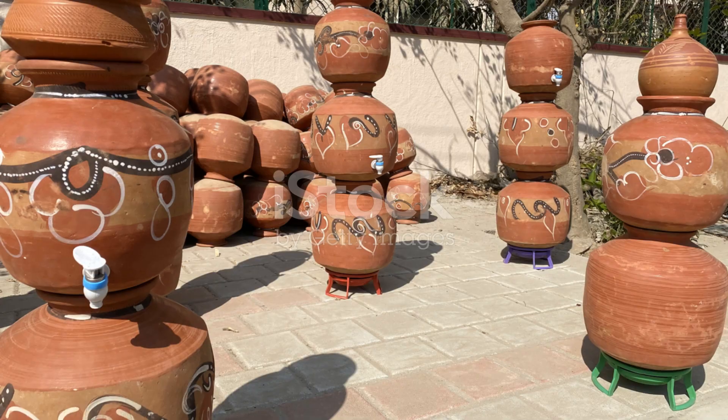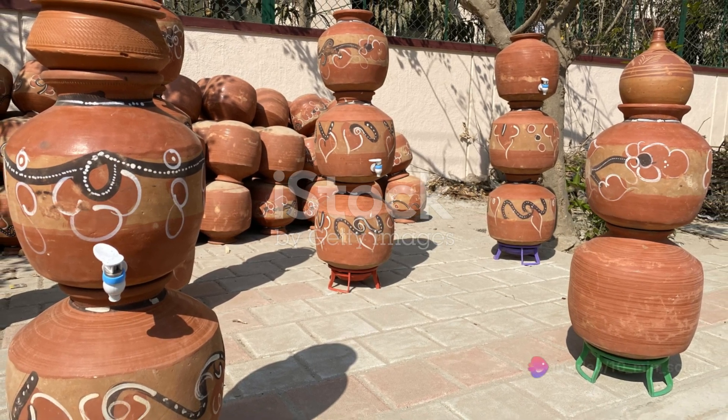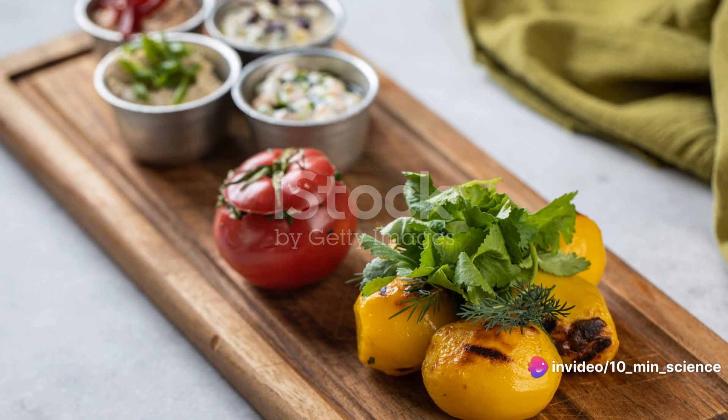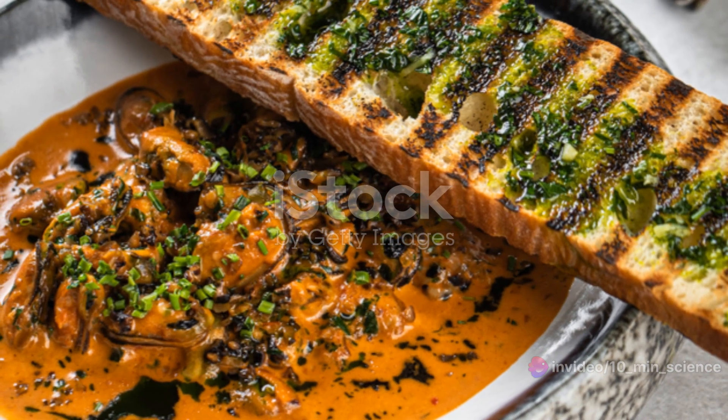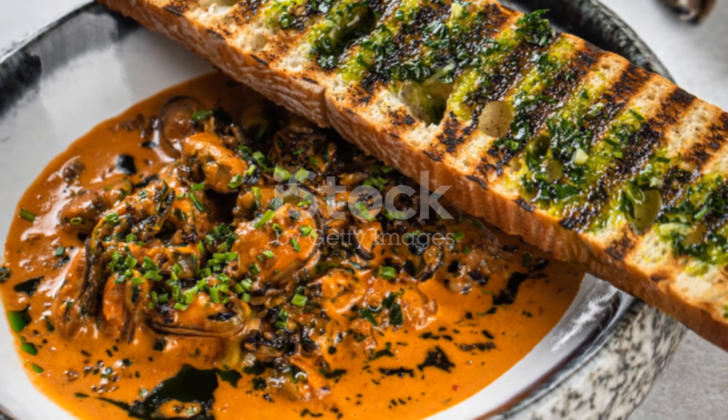Then, we have tragacanth, a natural gum obtained from the dried sap of several species of Middle Eastern legumes. This gum acts as a thickening agent, increasing the viscosity of the dispersion medium, making it an excellent suspending agent.